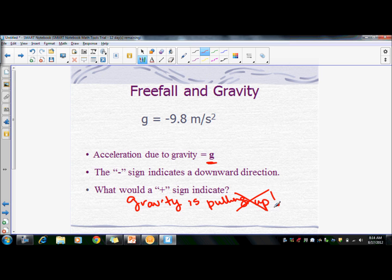gravity always pulls down. Even if an object is going up, it's still going to come back down because of gravity. So gravity will always be negative.